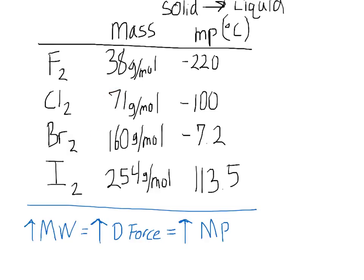And then iodine, which is really heavy — you increase the molecular weight, increase the forces holding all of the iodine together, and therefore the melting point is even higher at 113.5. That's above room temperature, so right now iodine is a solid. I also added the boiling point, and the boiling point follows the same trend. Fluorine has a boiling point of negative 188 degrees Celsius, so at room temperature fluorine is a gas because of how weak the dispersion forces are between it.